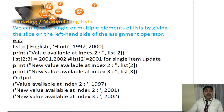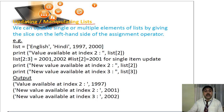Updating and manipulating lists. What is updating? Updating means that you give something new, and manipulating means you want to change, you want to manipulate. So we can update or manipulate the elements of the list — the elements in the list can be manipulated, can be updated.